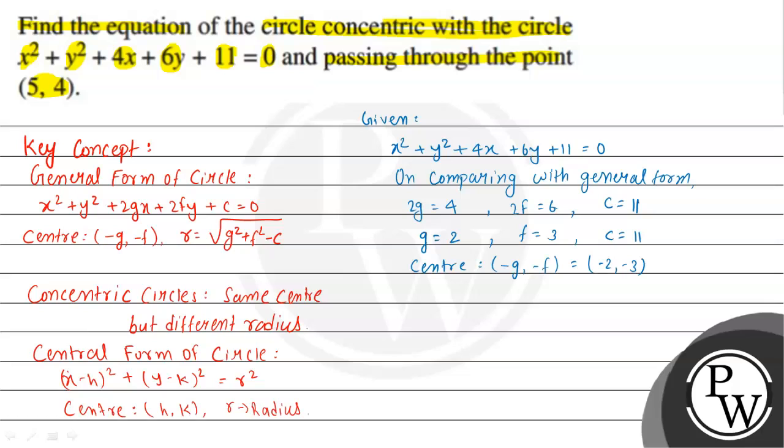Both the given circle and the required circle have the same center. So suppose this is the circle, and let's consider it as C₁. This circle is C₁ with center (-2, -3).